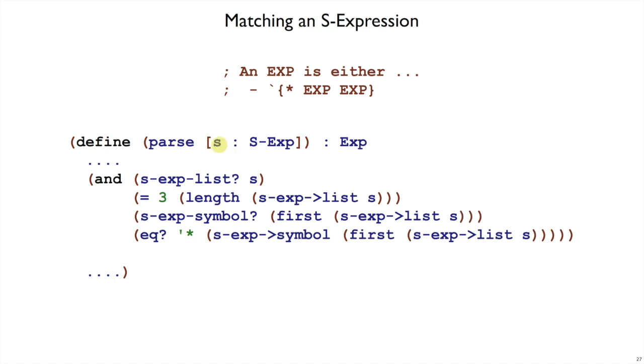So to perform that matching, we have an S expression s. We first make sure that it's a list-like S expression by using s-exp-list?. So that makes sure that it's back quote curly brace something. And then we want to make sure that there are three parts inside of that list-like S expression. We need a times and we need two other expressions. So once we know that it's of length three,